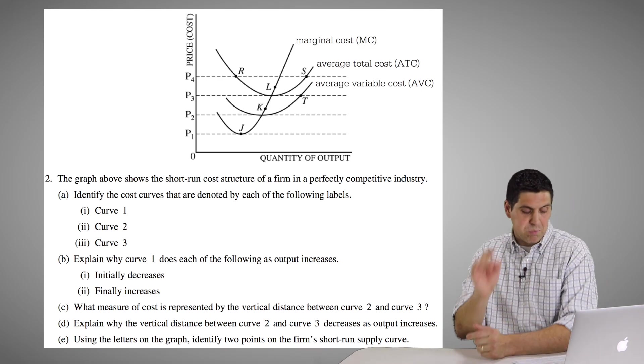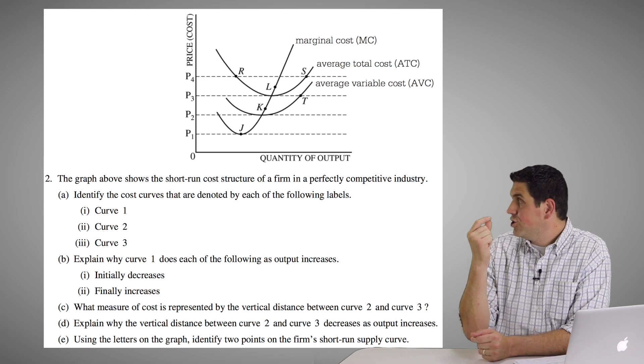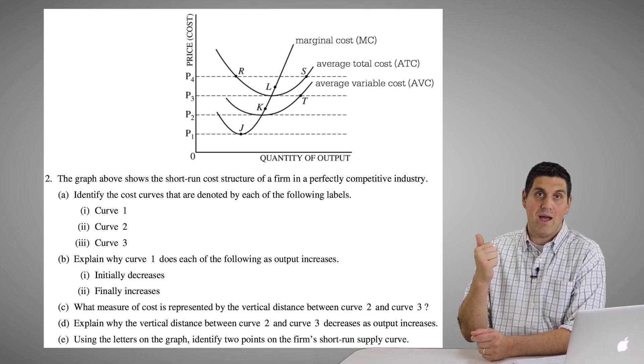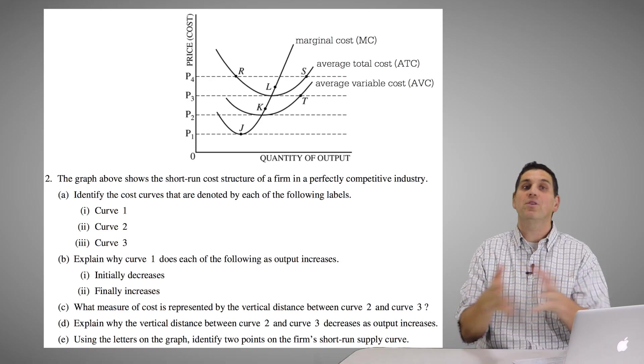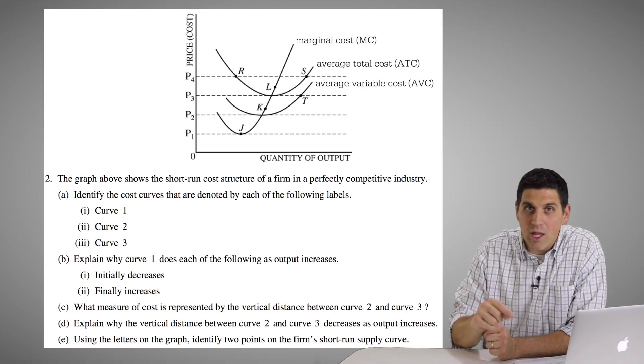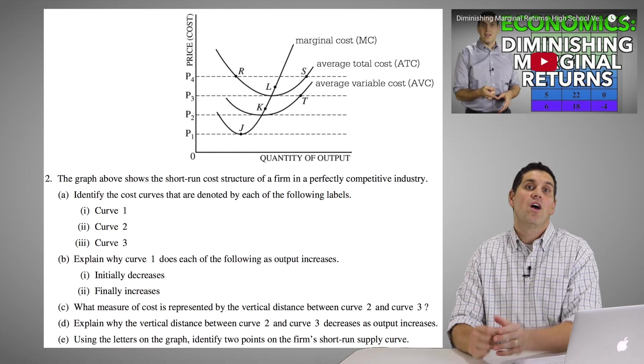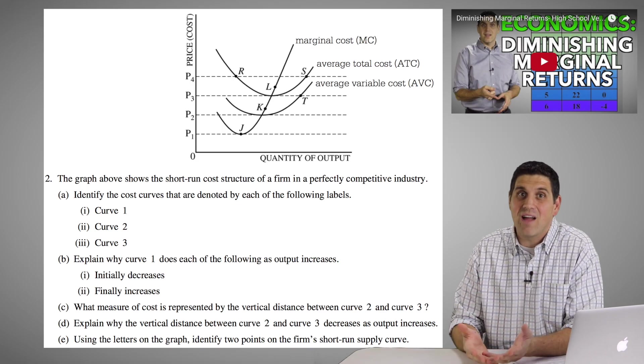So for part B, explain why curve one does the following: It initially goes down and then starts going back up. So that's a big concept, and it's super important to understand the relationship between inputs and outputs. And you learn about this early on in unit three. There's a video I made that talks about the law of diminishing marginal returns. That's the concept.